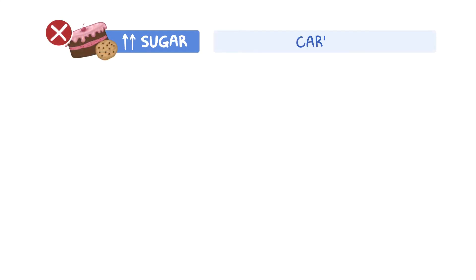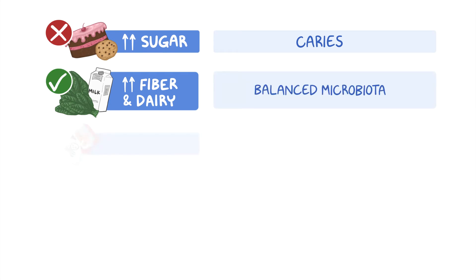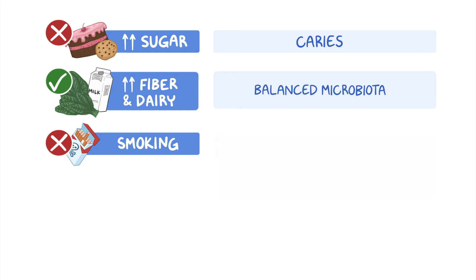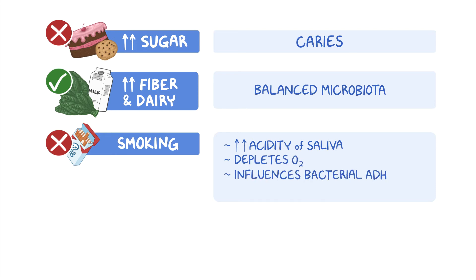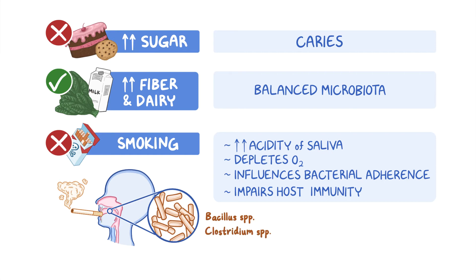A sugar-rich diet and frequent snacks can lead to dental caries, while a diet with increased fibrous foods and dairy products helps maintain a healthy balance in the oral microbiota. Smoking can alter the oral microbiota by increasing the acidity of saliva, depleting oxygen, influencing oral bacterial adherence to mucosal surfaces and impairing host immunity. Additionally, cigarettes carry a large number of different bacteria, and some — such as Bacillus species and Clostridium species — can survive the smoking process and colonize the oral cavity.